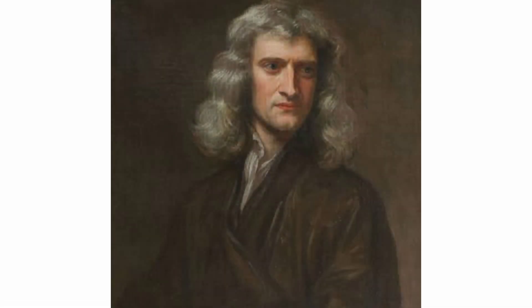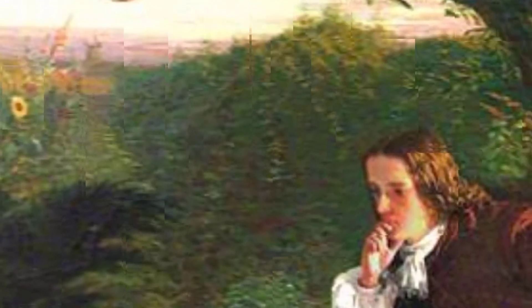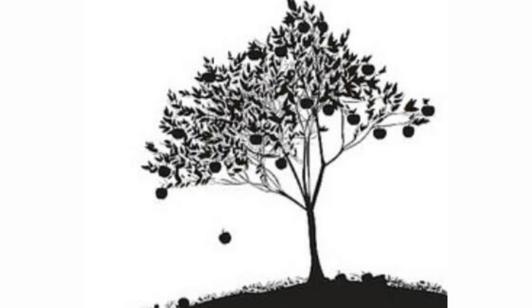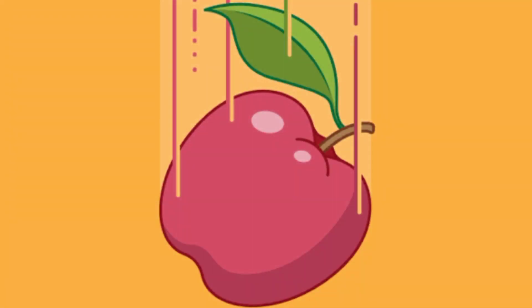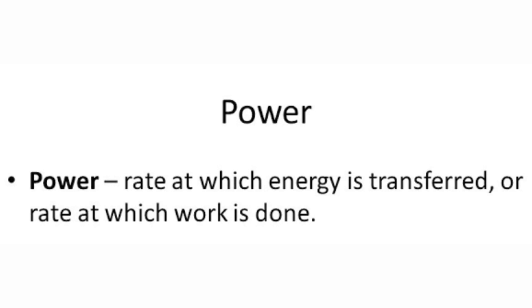What did a great scientist learn from an apple? Mathematician and physicist Sir Isaac Newton is said to have developed his ideas about gravity while sitting one day under an apple tree. As he watched the apple fall to the ground, it occurred to him that the apple was not merely falling but was being pulled towards the ground by an invisible force — this is the force he called gravity.